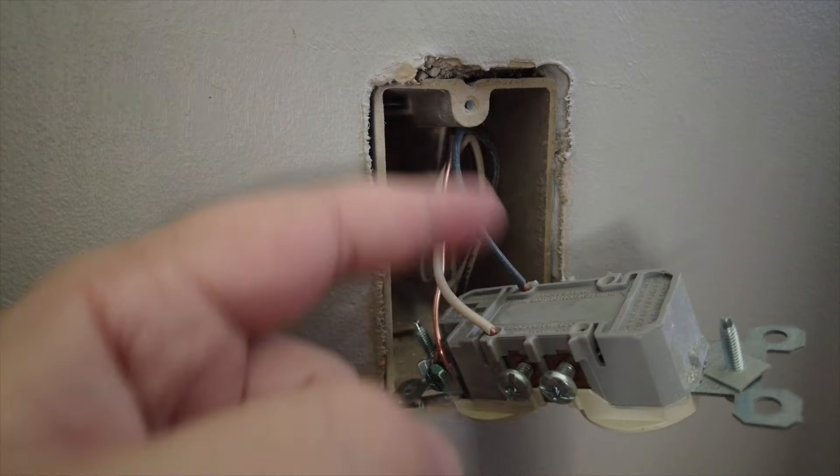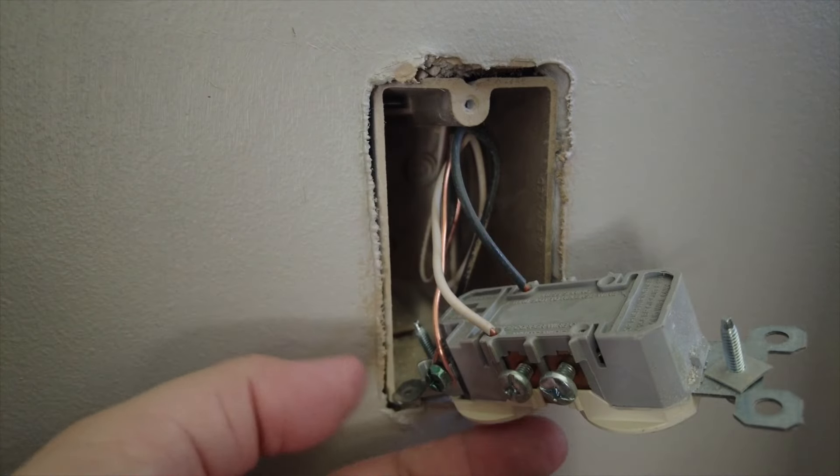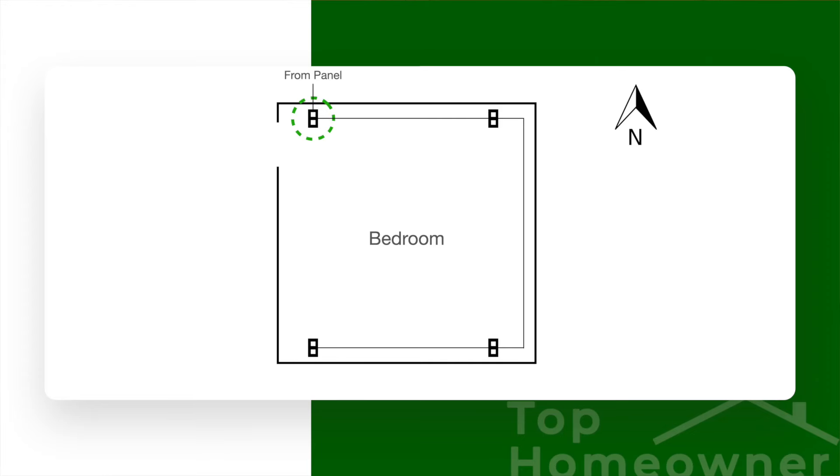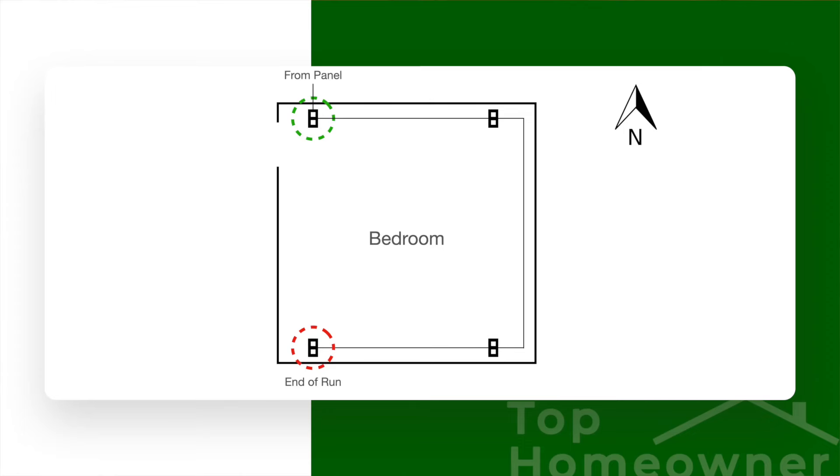Now if you remove a receptacle and it only has two wires coming into it with no wires going out, that means you're at the end of a run — the exact opposite of where you want to be. So if you remove a receptacle on the north wall and it only has two wires, but another receptacle has four wires, that one with four wires is probably the very first one coming into that room on that circuit. That gives you a shortcut into figuring out which receptacle is the first one, but you'll still have to go through this process of elimination to know for sure.